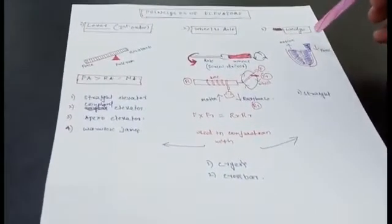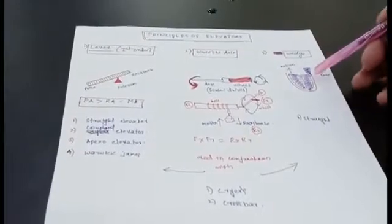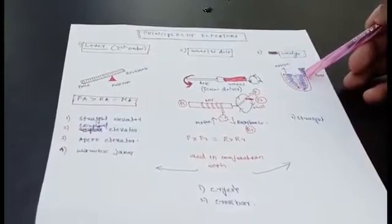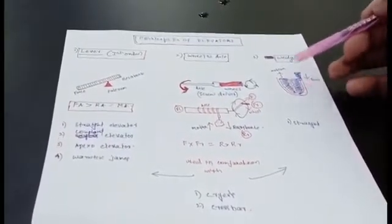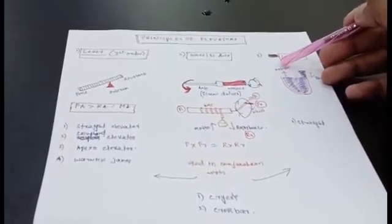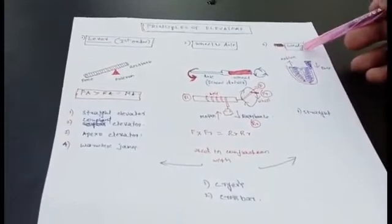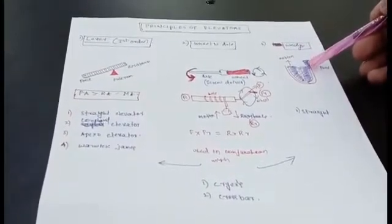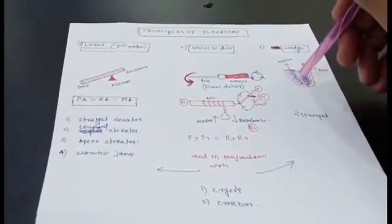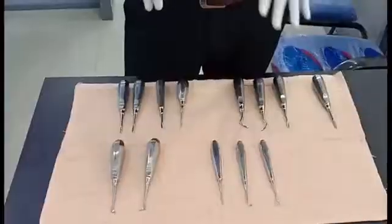In the wedge principle, we apply the wedge towards the apical direction between the tooth and the root. There will be force at the apical direction and movement of the tooth at the coronal direction. Opposite moments happen when the wedge is inserted between the root and tooth. This is commonly used for root tip removal.